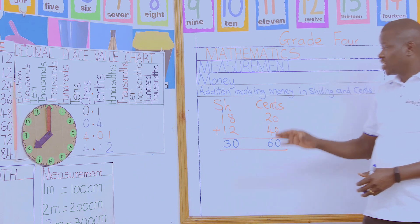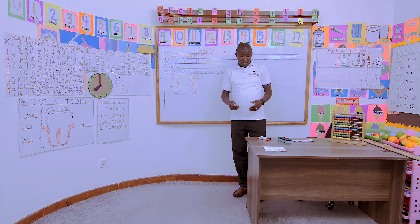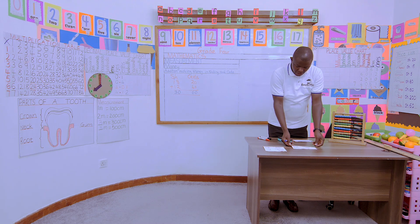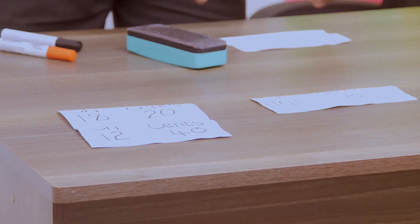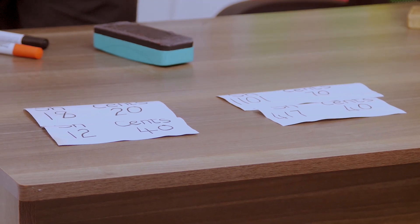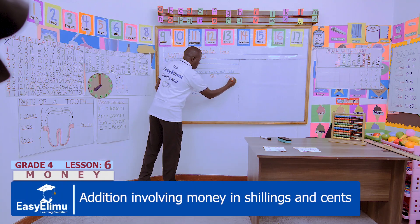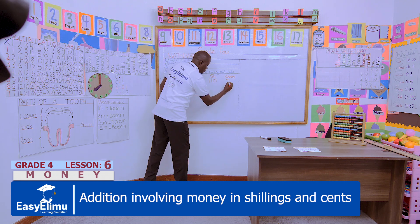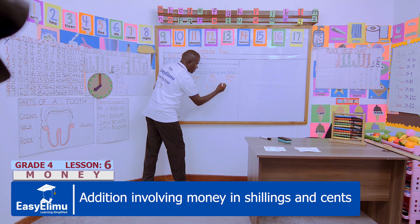That is addition of money involving shillings and cents — that was our first example. Again, in our group, can we identify the following number cards? We have 101 shillings and 70 cents, and we are adding 417 shillings and 40 cents. That is our next example — shillings and cents.